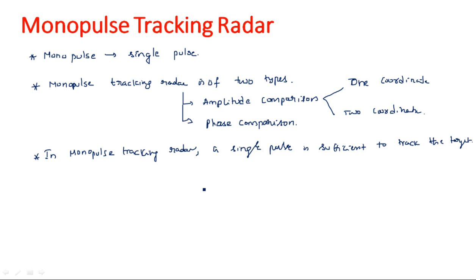In conical scan, a beam is continuously generated and the antenna keeps rotating. In the sequential scanning method we require minimum two signals spotted at different positions - two beams are used to calculate the target information. Whereas in monopulse tracking radar, only one beam is sufficient to identify the target.